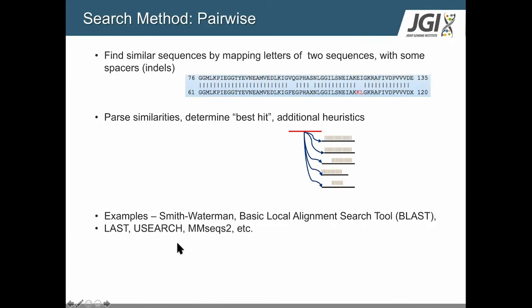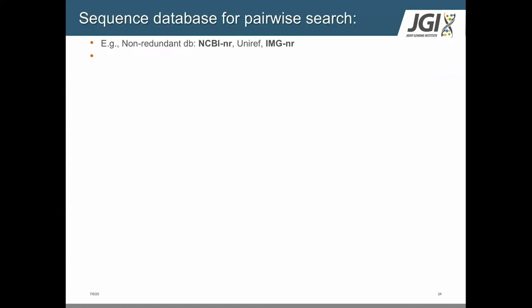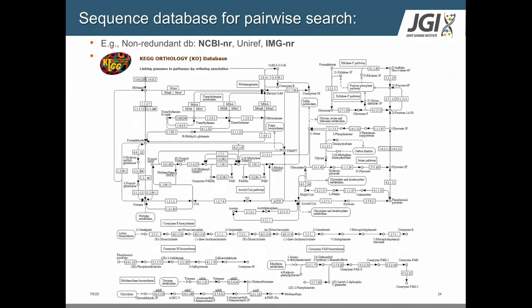There are many other tools being developed as the size of databases grows, with a trade-off between sensitivity and speed. Databases for pairwise searches include NCBI NR — everyone has probably run a BLAST job against NR at some point. Within IMG we also have an IMG NR database for pairwise searches, and as DRAM already mentioned, we also search the KEGG Orthology database.